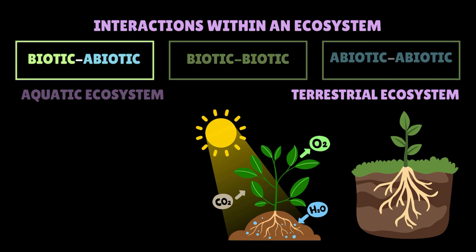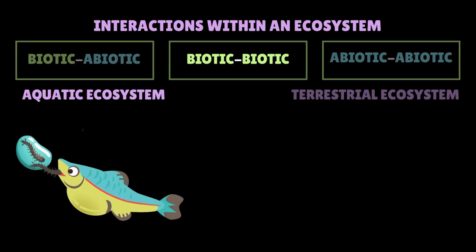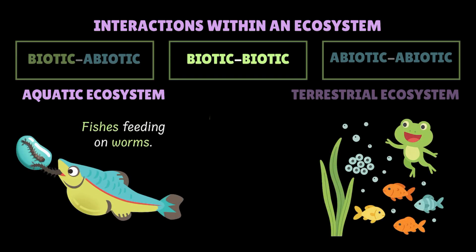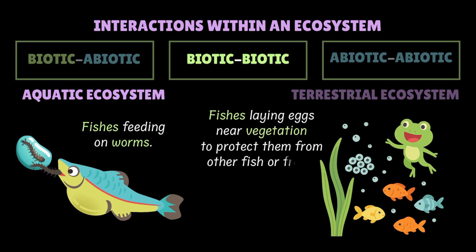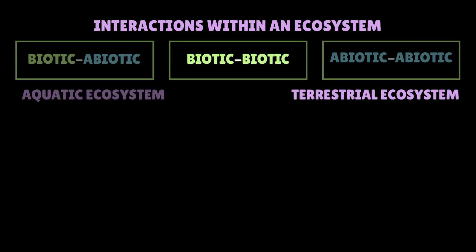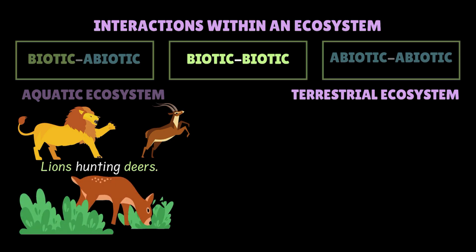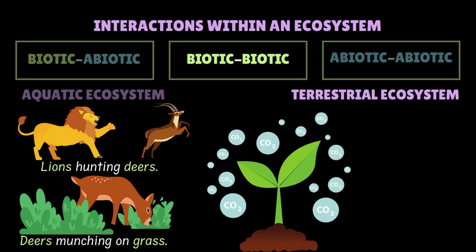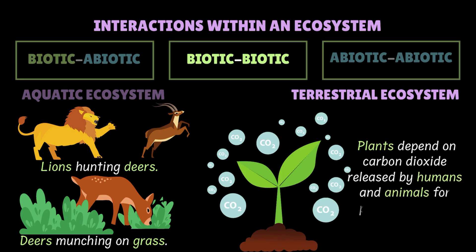Let's move on to biotic-biotic interactions. In an aquatic ecosystem, we see fishes feeding on worms, and fishes laying eggs near vegetation to protect them from other fishes or frogs. In the terrestrial ecosystem, we see lions hunting deer and deer munching on grass. And in both ecosystems, we see plants depending on carbon dioxide released by humans and animals for photosynthesis. All of these are examples of biotic-biotic interactions.